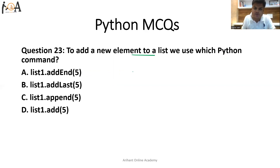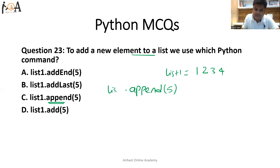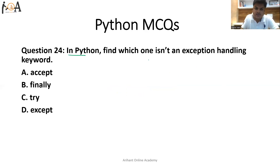Question 23: to add a new element to a list, which Python command do we use? The command is append — dot append. This command is used for adding any element into the list at the last position. For example, if we have a list [1, 2, 3, 4] named list1 and we want to add 5 at the end, we use list1.append(5) and the output would be [1, 2, 3, 4, 5]. So option C is the correct answer.